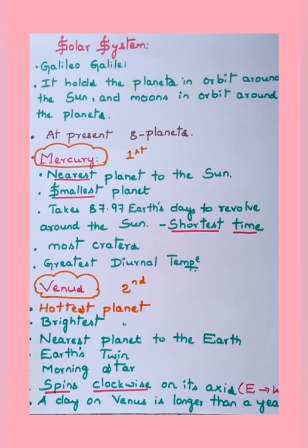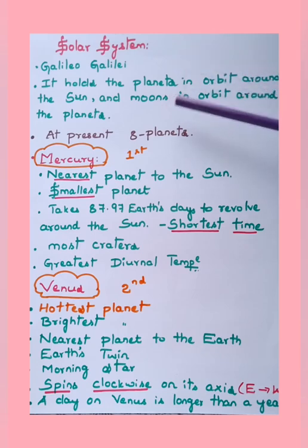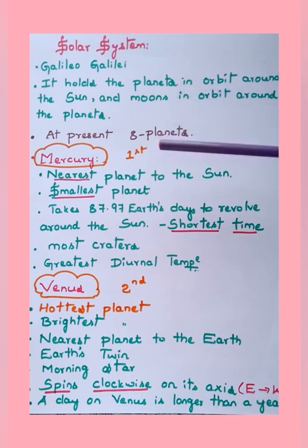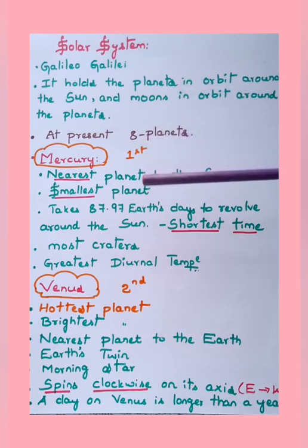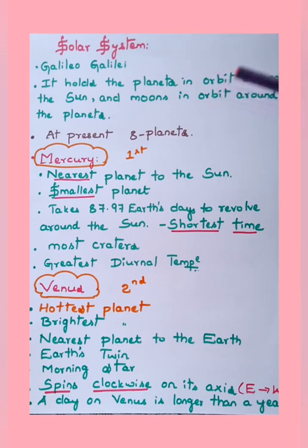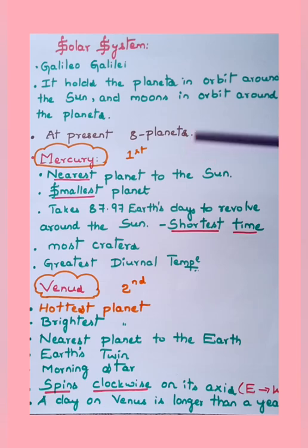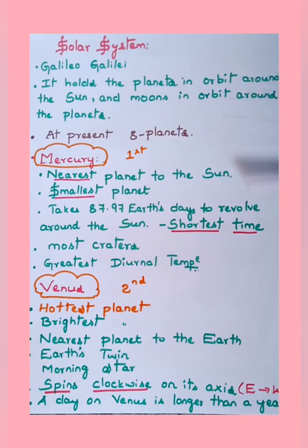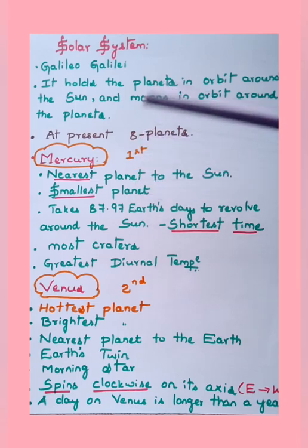Moving to important points about our solar system. Galileo Galilei gave the entire idea of the solar system. Our solar system holds the planets in orbit around the sun and the moon in orbit around the planets. At present there are eight planets in the solar system. There were nine, but Pluto was excluded because it was considered a dwarf planet and did not possess the characteristics of a planet.